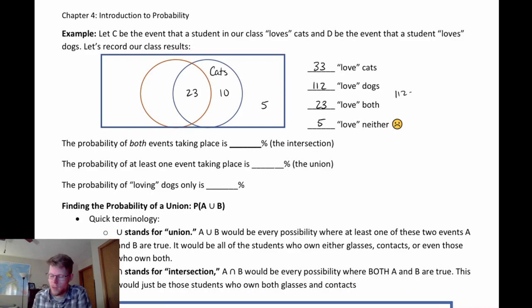Same thing with dogs — we do 112 minus 23, which is 89. So there are 89 unique dog-only lovers. The total number of people is 89 plus 23 plus 10 plus 5, giving us 127 people.